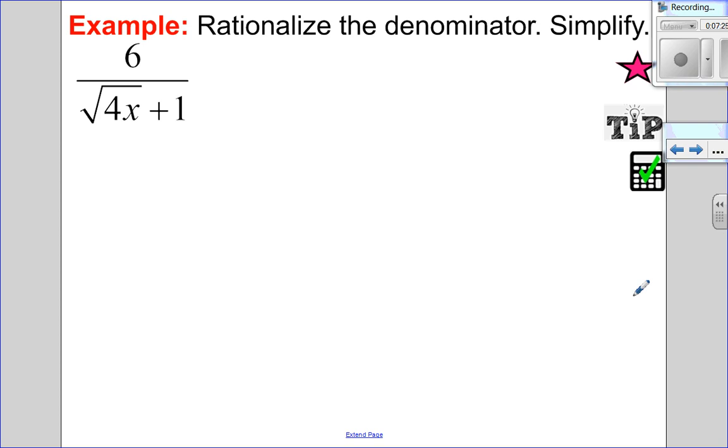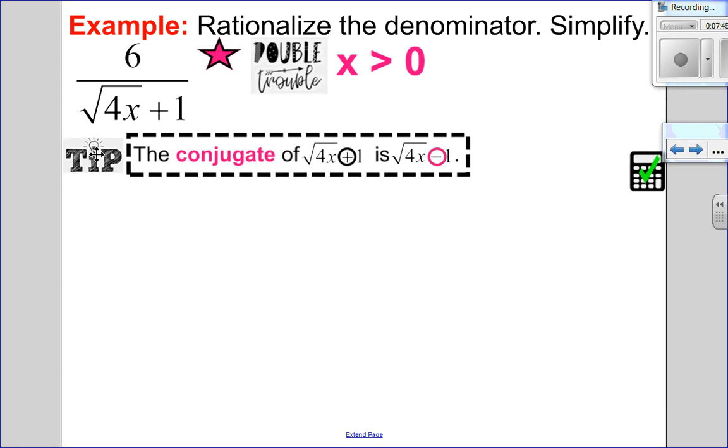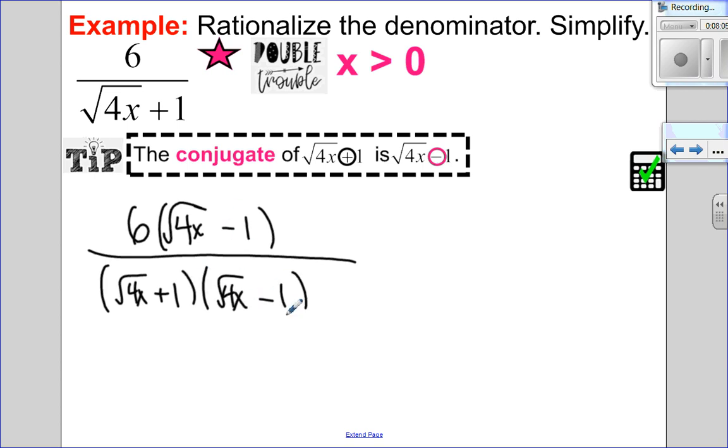Let's try another one. So this time I have a variable in the denominator, so I have to look for my restrictions. Now, hopefully you remember those double trouble restrictions. I can't square root a negative and I can't divide by 0, so x is greater than 0 for my restriction. Okay, so here's my tip. The conjugate of root 4x plus 1 is root 4x minus 1. So let's write that out. So I'm going to take my numerator, multiply it by the conjugate, root 4x minus 1 over root 4x plus 1 times root 4x minus 1. So I'm multiplying top and bottom by the same thing. I'm not changing the value. I'm going to leave my numerator factored. So only expand what you're trying to rationalize, which is the denominator.